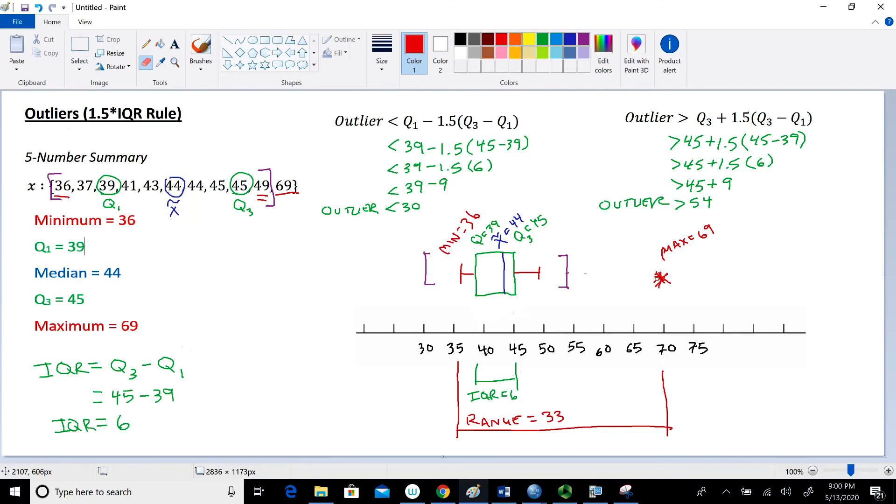By the way, even though this is an outlier, it's still the maximum value. This is not the maximum value right here. This is just the next largest point in the data set. And then in addition to that, it gives us our interquartile range, a measure of variability, and another measure of variability, which is our range right here.